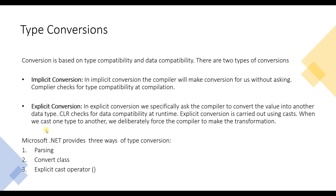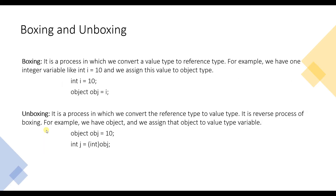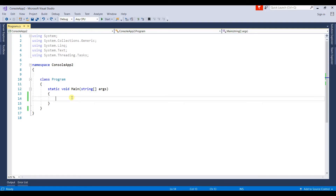Next we have boxing and unboxing. Boxing is a process in which we convert a value type to a reference type. For example, we have an integer variable int i = 10 and we assign this value to an object type — this process is called boxing. Unboxing is the reverse process: we convert a reference type back to a value type. For example, we have an object obj with value 10 and we assign that object to an integer variable.